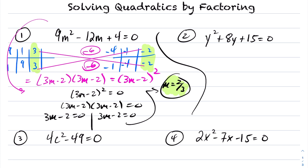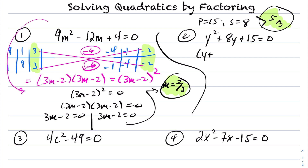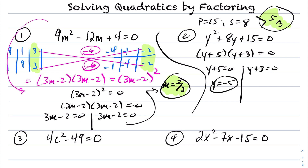For the next question, we have a simple trinomial. I need to think of two numbers whose product is 15 and whose sum is 8. Those two numbers are 5 and 3. So this will factor into (y plus 5)(y plus 3) equals 0. The only way this is going to be 0: either y plus 5 is 0, or y plus 3 is 0 — i.e., either y is negative 5 or y is negative 3. So this quadratic has two roots, one at negative 3 and one at negative 5.